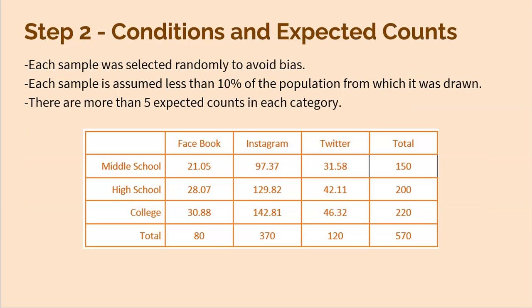Now the second step is checking those conditions. Each sample has to be random to avoid bias. Because we are sampling from populations, we do need to make sure our sample size is less than 10 percent of the population from which it was drawn. And we also have to make sure that we have five or more expected counts in each category.